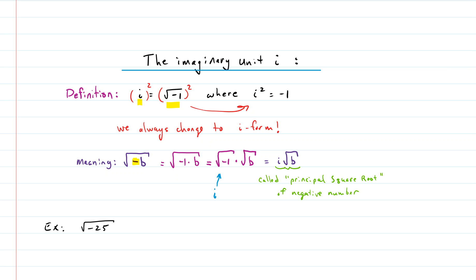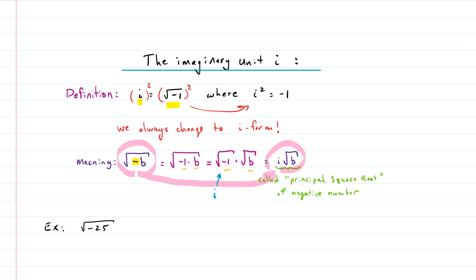The negative b under a radical becomes the square root of negative one times b. We split up the radicals to have negative one by itself, and since the square root of negative one equals i, we get i times the square root of b. Most students do those middle steps in their head and go straight to the final result — called the principal square root of a negative number. For example, the square root of negative 25: the negative comes out as i, giving i times 5, written as 5i in standard form.